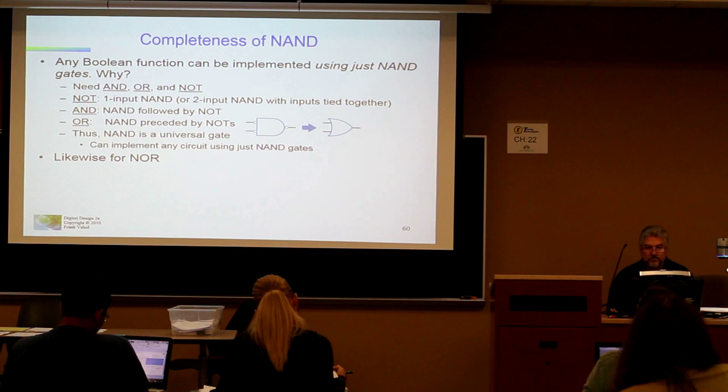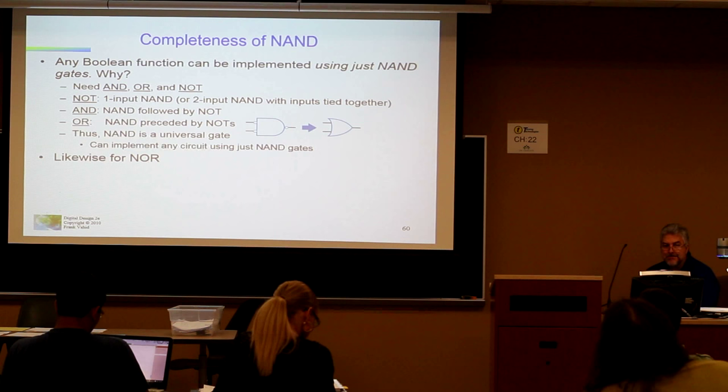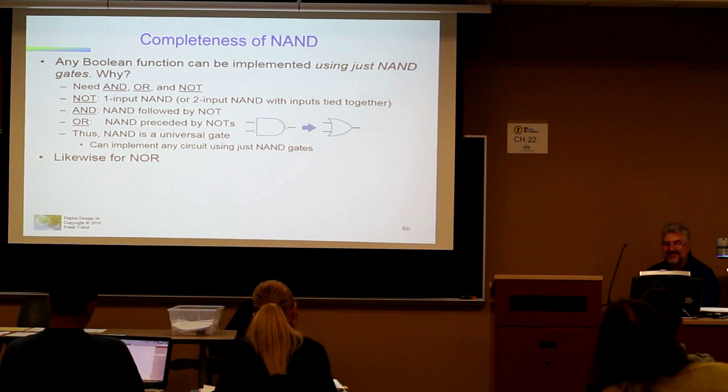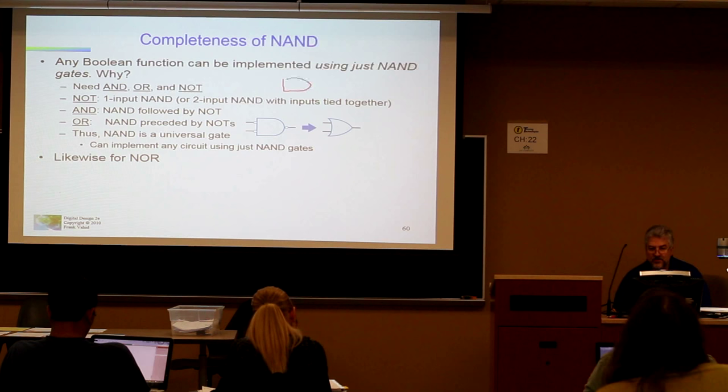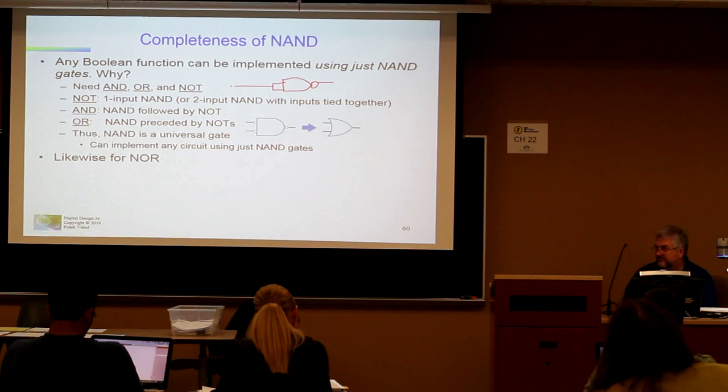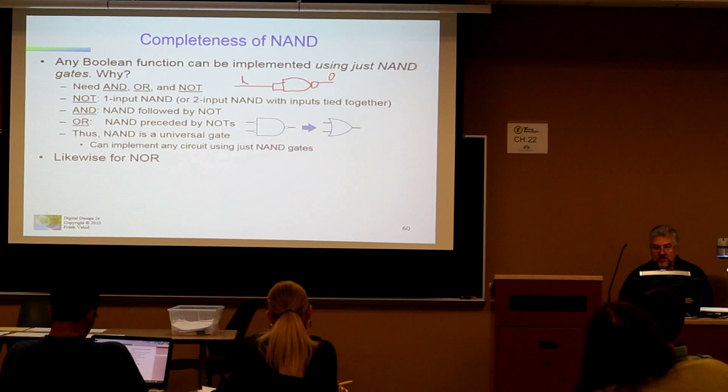Now any Boolean function can be implemented using just NANDs. Wow, do you believe that? Well, if you want to represent a NOT gate, you have a one input NAND or a two input NAND tied together. So in this case, this is a NOT gate, because if this is one, one going into an AND gate will be a zero, it's NOTed, it becomes a zero. If this is a zero, it goes into the AND gate, zero AND zero is zero, through the NOT it becomes a one. Pretty neat, huh?